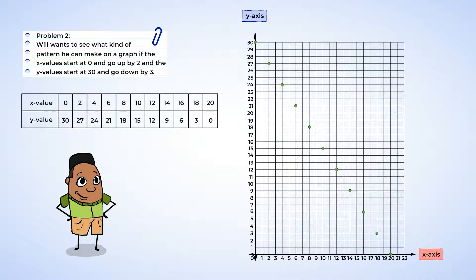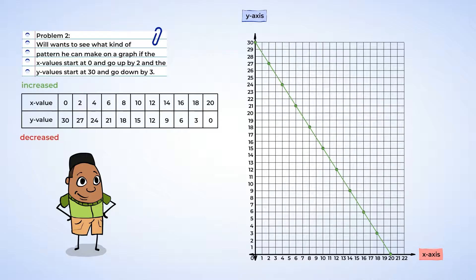Now look at that — Will also made a straight line with his pattern, but his line goes down and not up. You wonder why that is. With Latifah and Jenny's numbers, as the x values went up, the y values also went up. But with Will, as the x values increased, the y values decreased. That explains why Will's line went down. What a mighty pattern, Will!